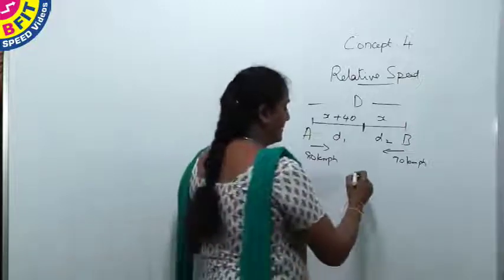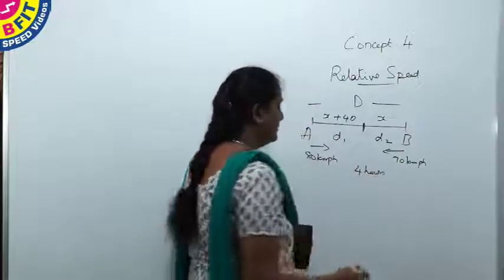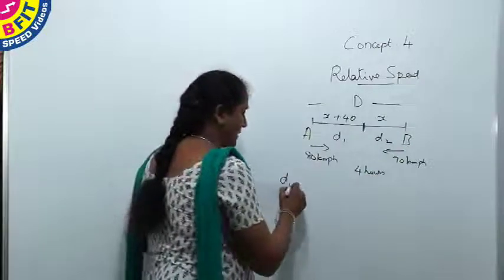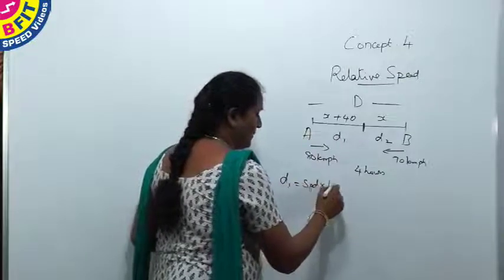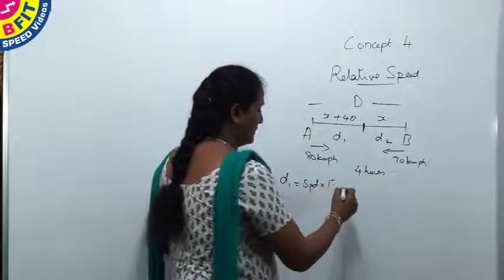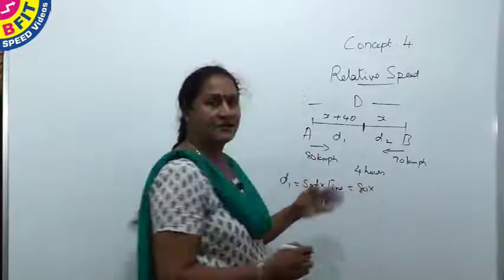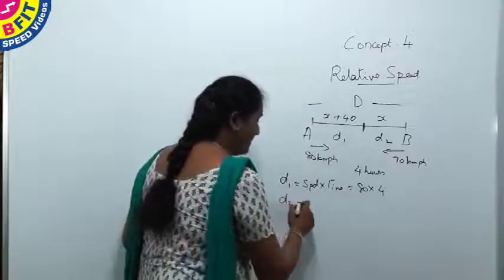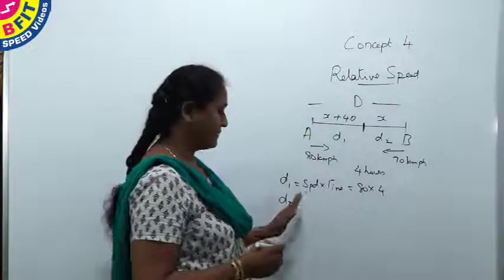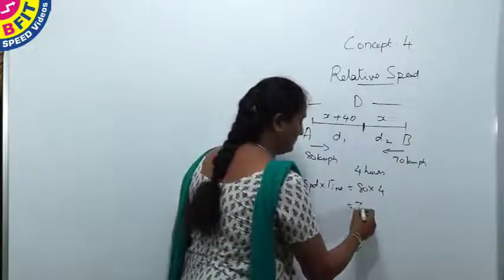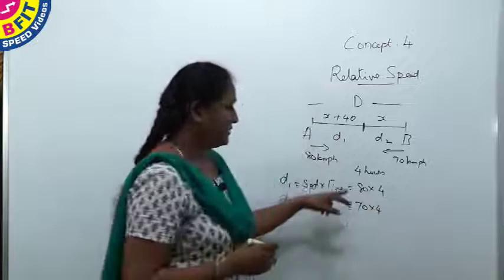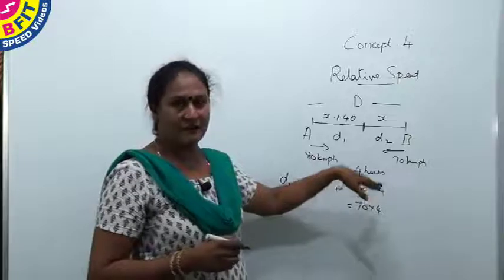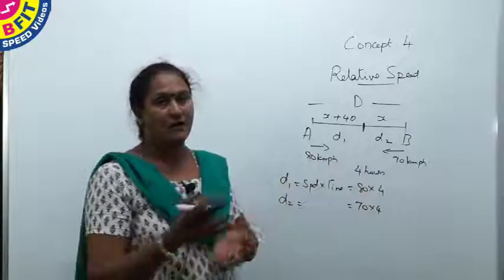Travel time is 4 hours. Distance covered by the faster train: D1 = speed × time = 80 × 4 = 320 kilometers. Distance covered by the slower train: D2 = 70 × 4 = 280 kilometers. Adding D1 and D2 gives the total distance between A and B.